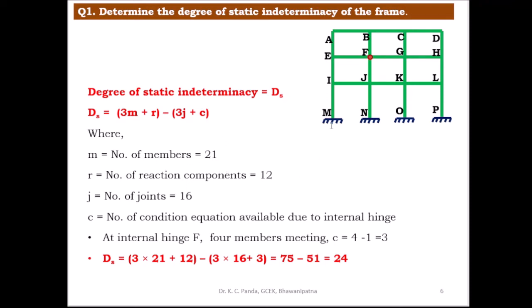Counting the joints: the number of joints j = 16. The number of condition equations available due to the internal hinge: at joint F, there are 4 members meeting, so c = 4 − 1 = 3.